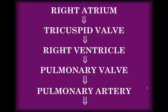Remember, the atrium is a collection chamber and the ventricle is the pump. What kind of blood is it? It's deoxygenated — oxygen-poor blood that has come from our bodies, because in the body the cells have been taking the oxygen and giving up their carbon dioxide.